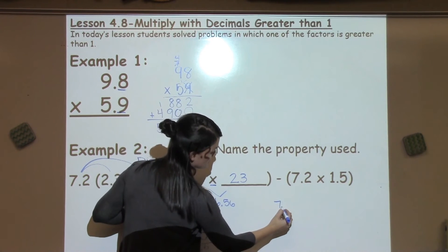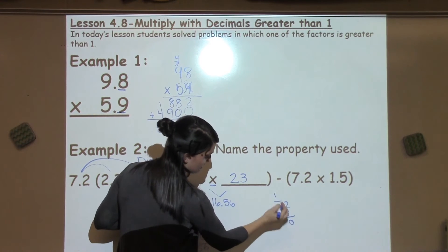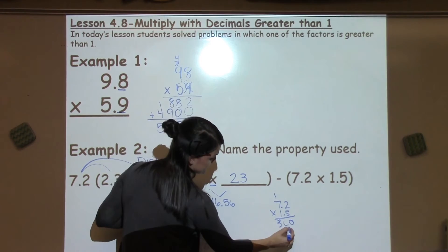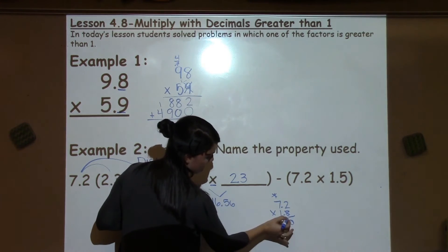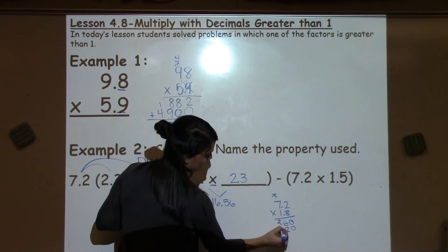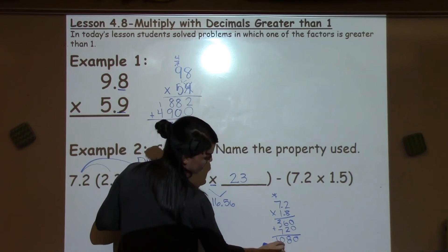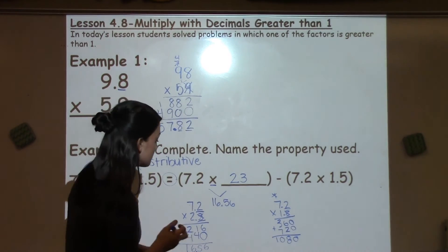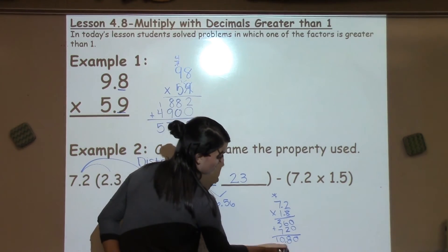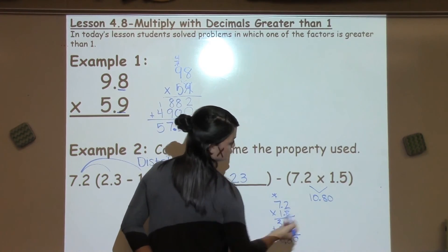Now I can work this side of the problem. 7.2 times 1.5. 5 times 2 is 10, 5 times 7 is 35, plus 1 is 36. Anytime I make an X, I make an O down below. 1 times 2 is 2, and 1 times 7 is 7. I'm going to add my numbers up for a final answer of 1080. But again, I have 2 numbers behind my decimal in my problem, so my answer for this problem is 10.80.